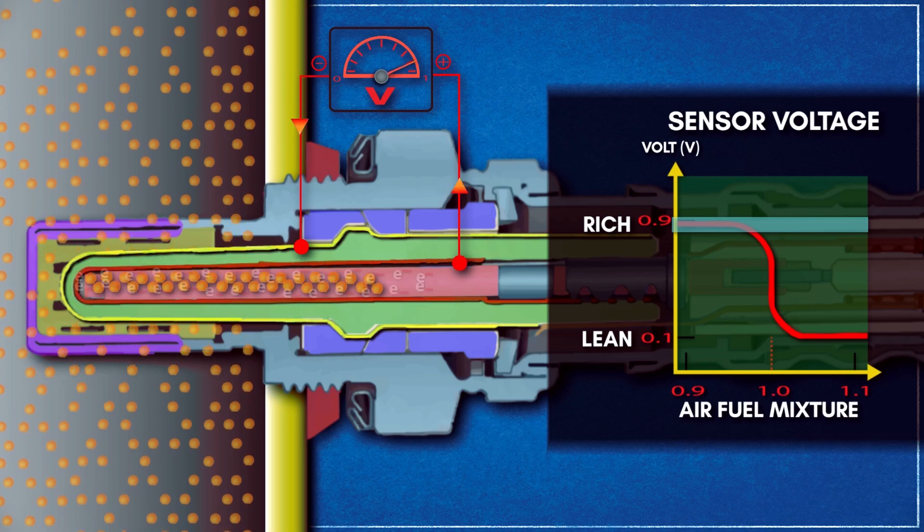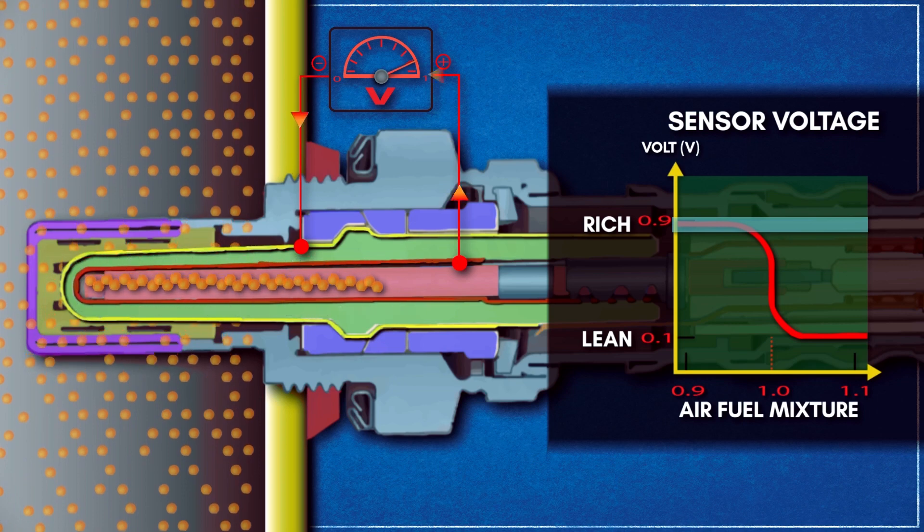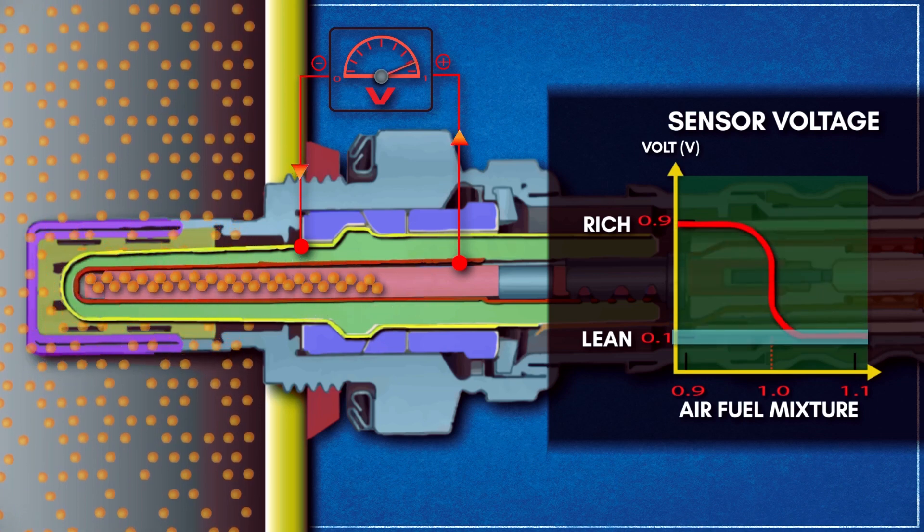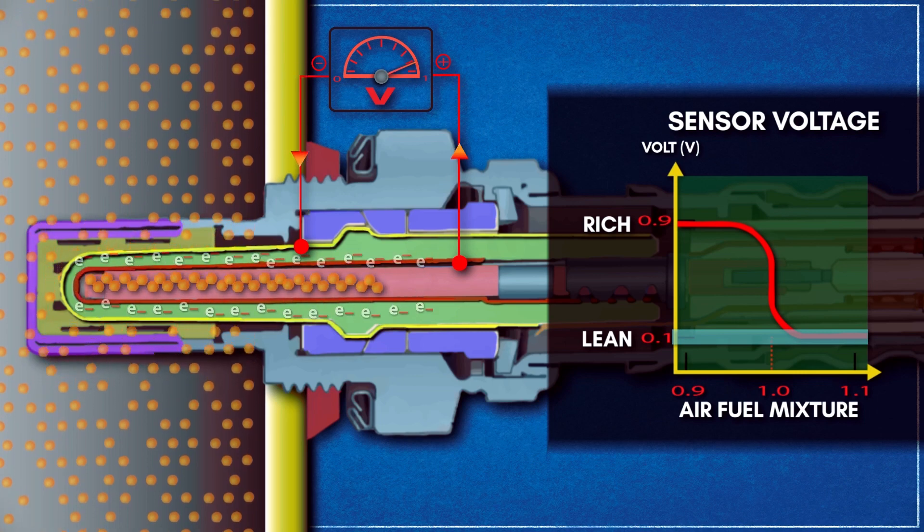Conversely, a greater concentration of oxygen in the exhaust stream compared to the ambient levels of oxygen would decrease the voltage down to 0.1 volts, causing the ECU to reduce the time the fuel injectors are open, or leaning out the mixture.